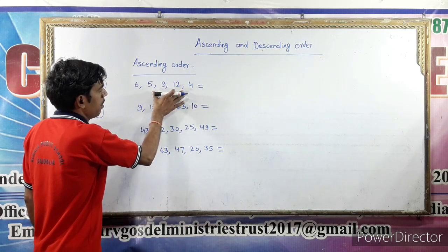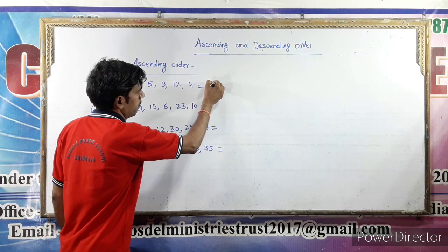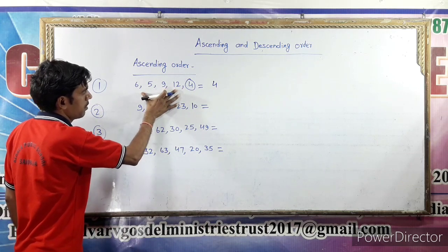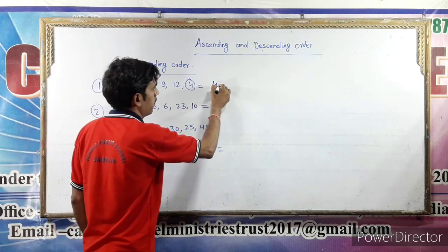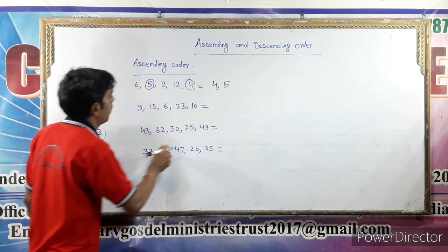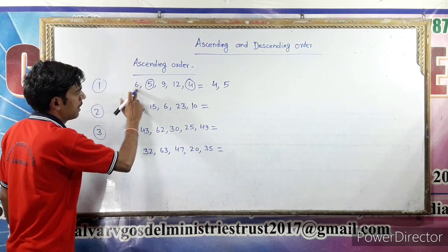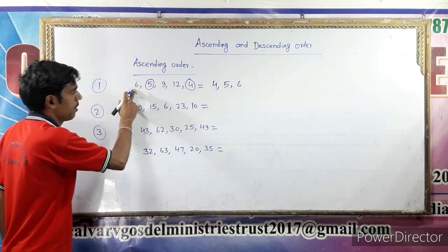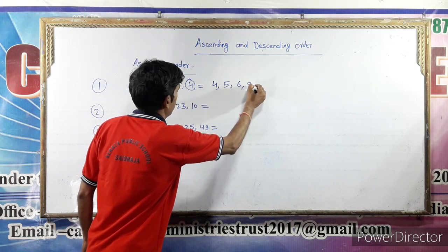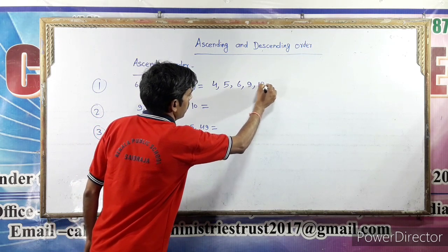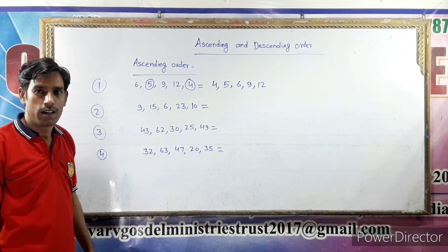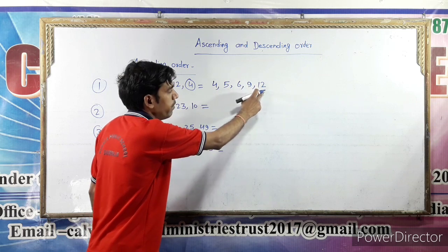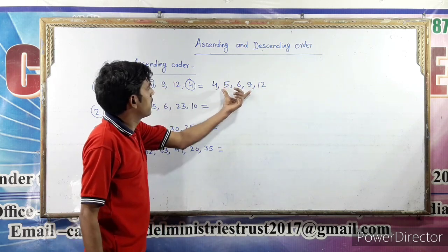In these numbers, the smallest number is 4. From the remaining numbers, the next smallest number is 5. Now we have three numbers: 6, 9, and 12. And 6 is the smallest, then 9, and last the greatest number 12. So these numbers in ascending order are: 4, 5, 6, 9, 12.